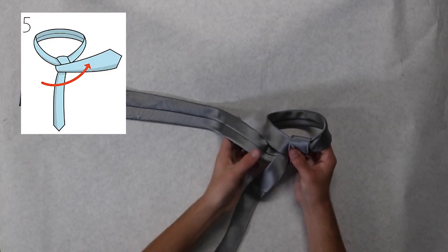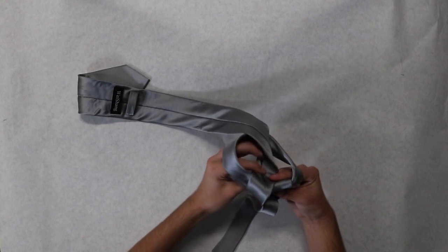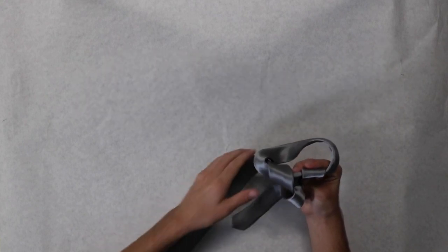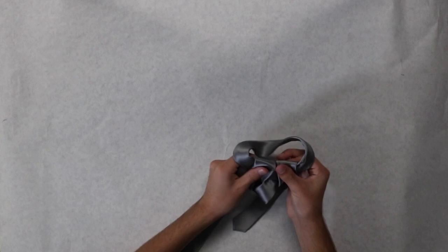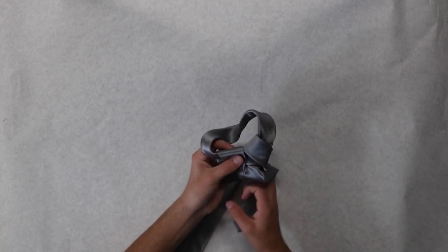On the last loop, make sure you go over the small end, through the neck hole and through the hole you made. Afterwards, adjust it and tighten it.